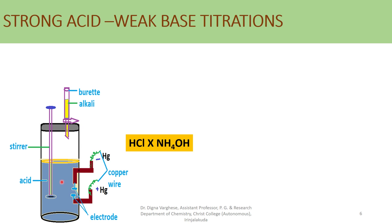The highly mobile H+ ion is present initially, so the conductance measured before titration is high. After adding alkali, the H+ ion is replaced by NH4+. The H+ ion has high mobility, but ammonium hydroxide is a weak base and NH4+ has slow mobility. Therefore, the conductance decreases after addition of alkali.